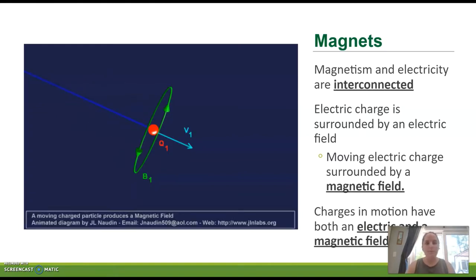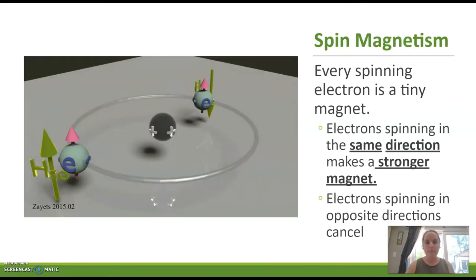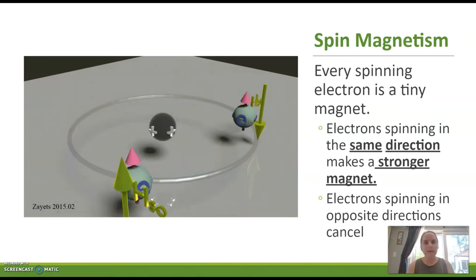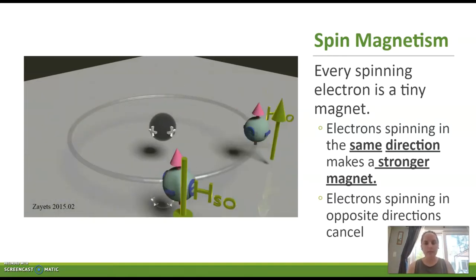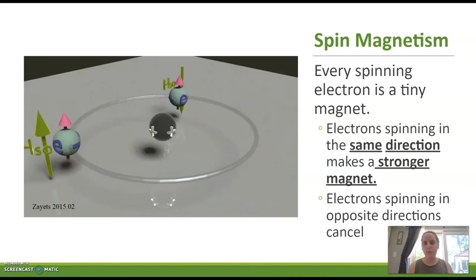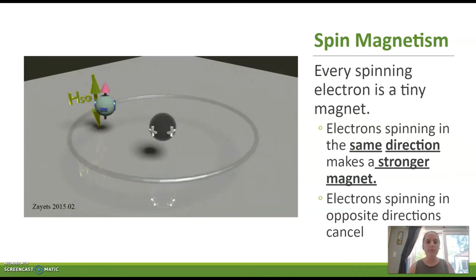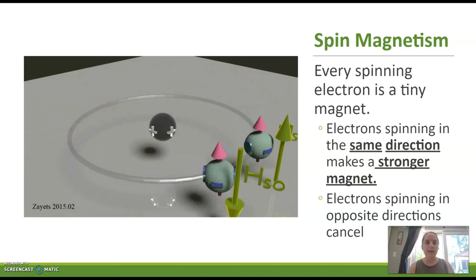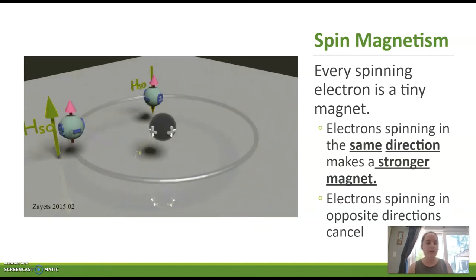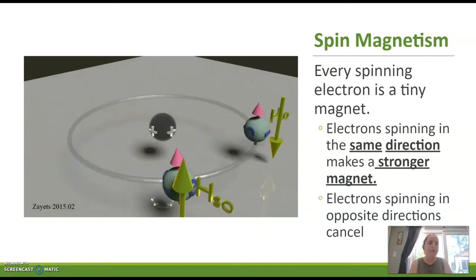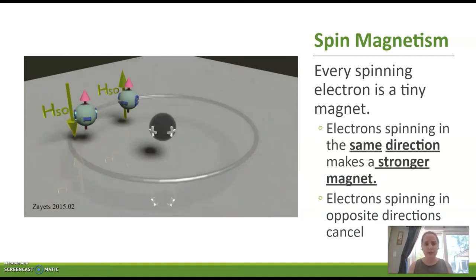This is when you would probably learn about the right hand rule in class. If you stick out your right hand, your thumb represents the motion of your electric charge, and your four fingers represent the concentric circle that your magnetic field makes. So a charge in motion is going to have both an electric property and a magnetic property, and that's where we get these magnetic fields. Magnetism as a force is all stemming from charges in motion.